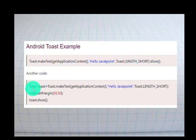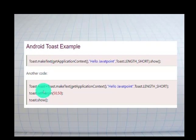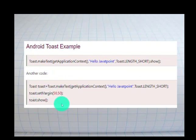Alternatively, you can create an object of Toast. Toast t = Toast.makeText(...). With this object, you can set properties such as setMargin() for horizontal and vertical margin. Then call t.show() to display the toast. There are two ways: either chain the toast directly using makeText().show(), or define the Toast object, set the margin, and then call the show method.